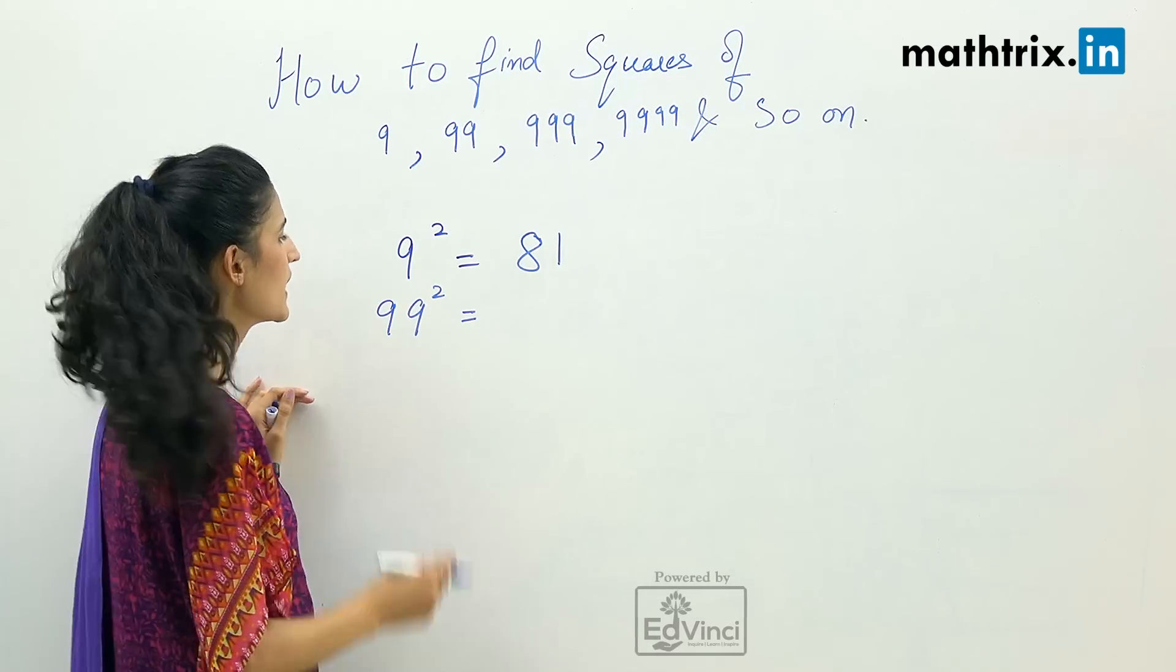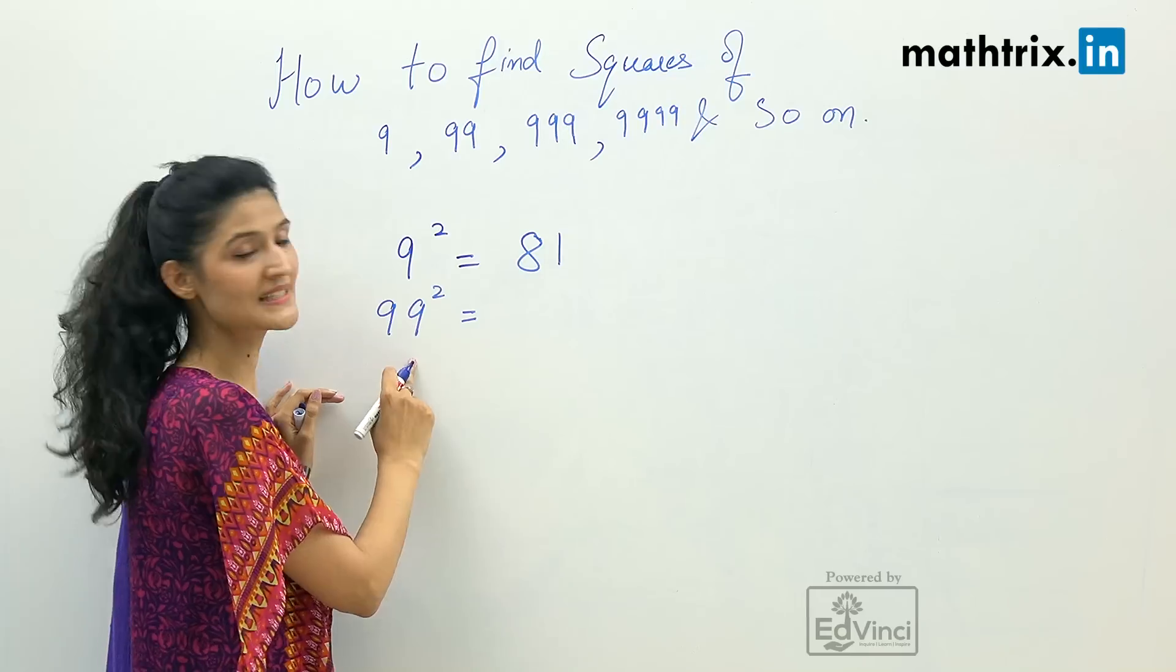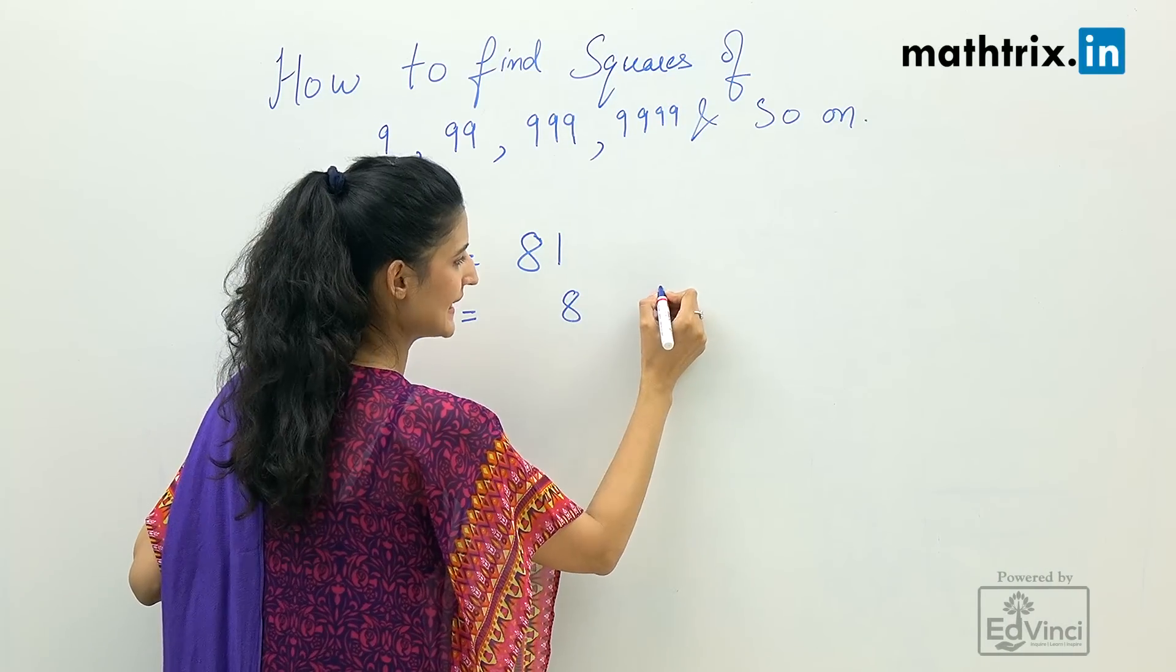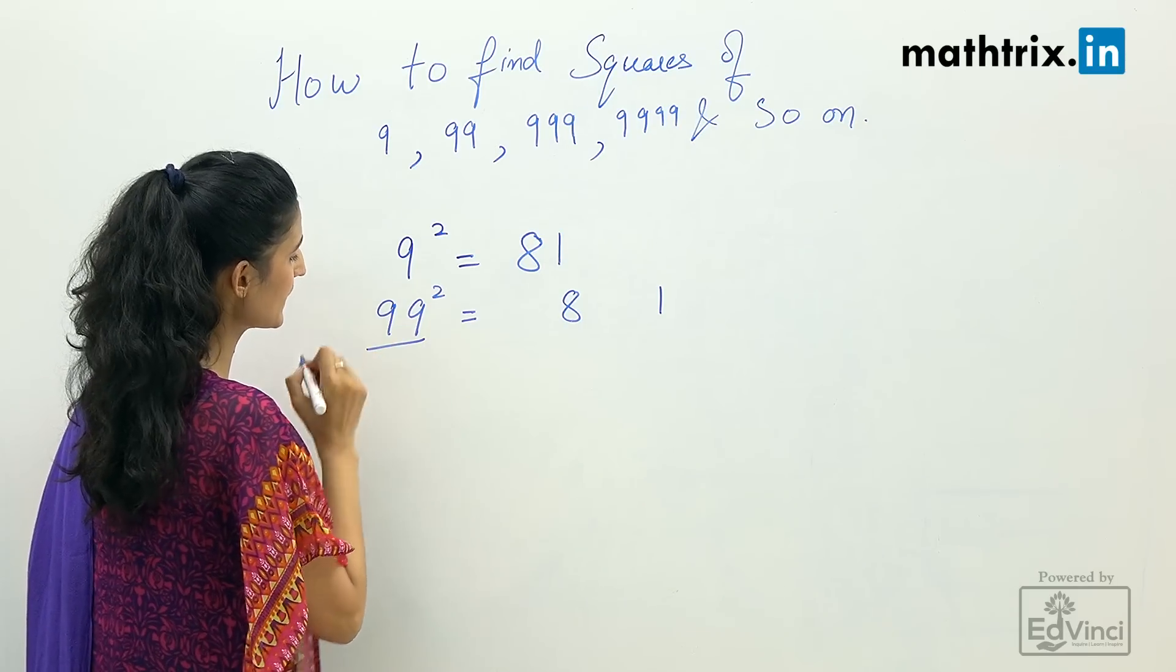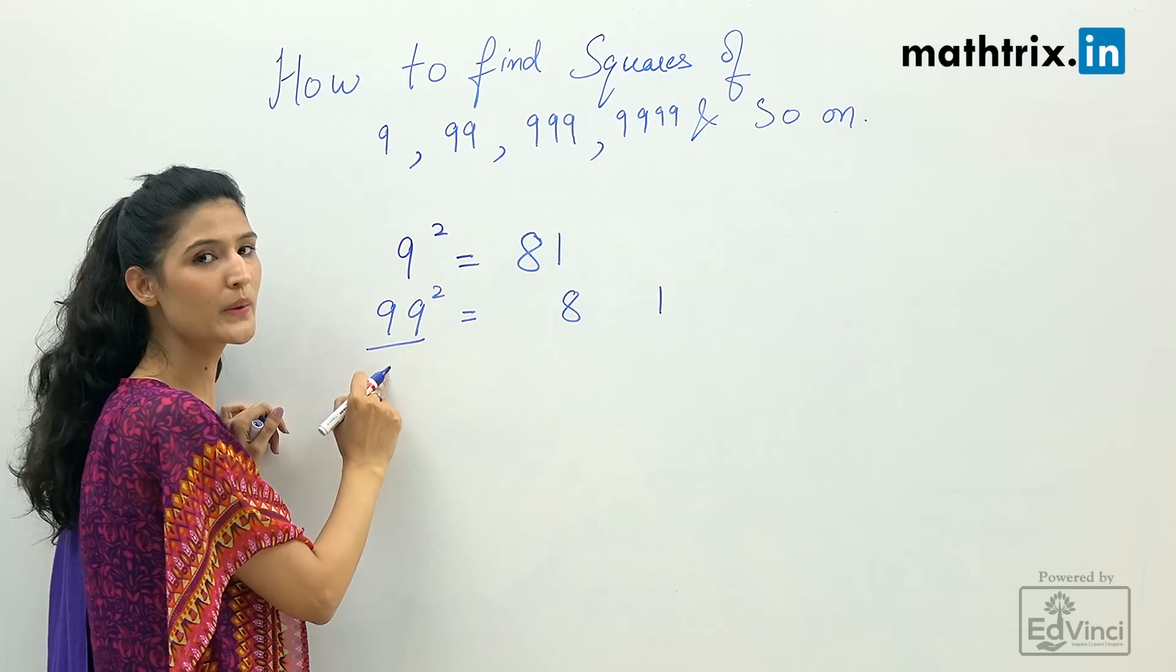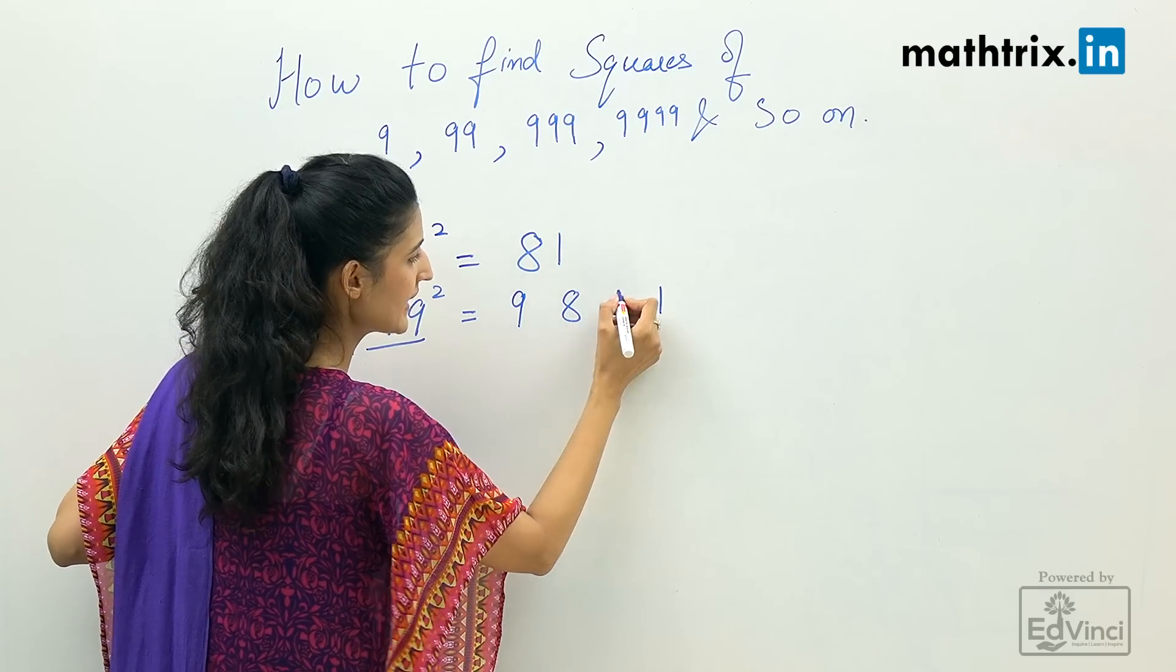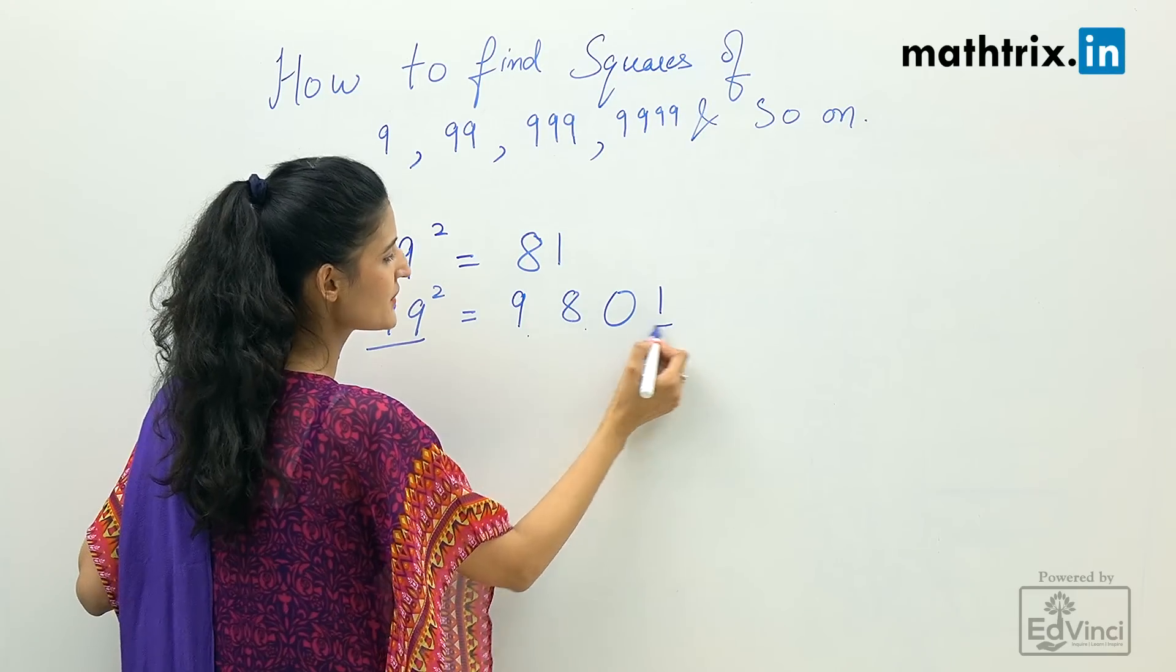Rule number 1: 99 square must contain 8 and 1, but we will write it separately, 8 here and 1 here. Rule number 2: we will see the count of 9s we have. As we have count of 9 equals 2, we will take 1 count less, so we will take 1 nine and 1 zero. So the answer is 9801.